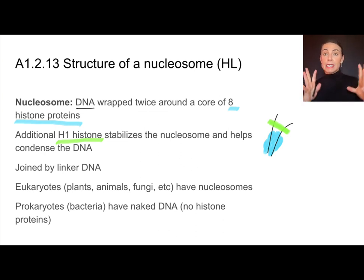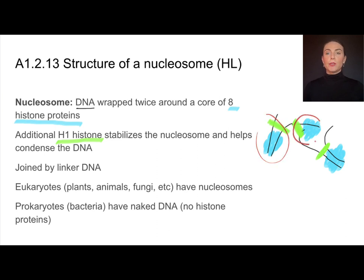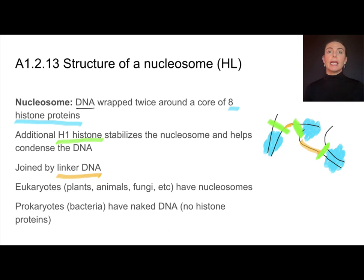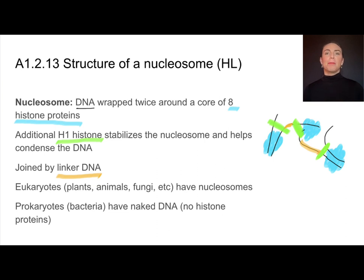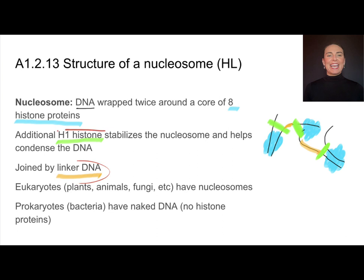When it's time for DNA to condense into chromosomes, the H1 histone becomes important as well. Here I've drawn three of these nucleosomes, and they are joined together by a segment of DNA called linker DNA — that's the DNA in between these histone proteins. This topic focuses on structure: important things to know are that nucleosomes are only in eukaryotes, not prokaryotes, with eight histone proteins joined by linker DNA and H1 histones to stabilize.